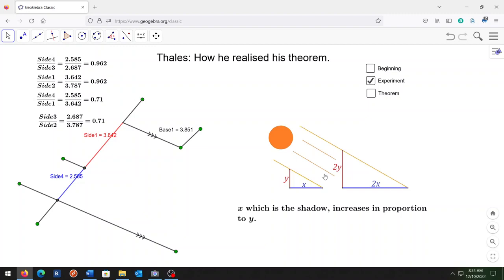The theory of similar triangles was further developed after the shadow experiment.